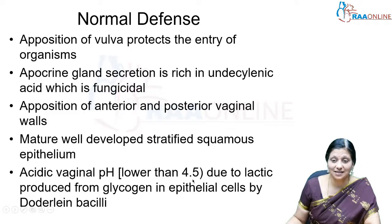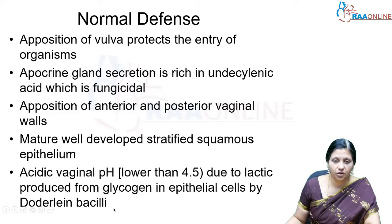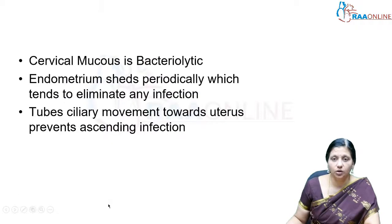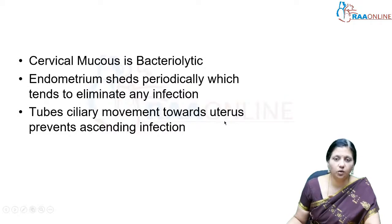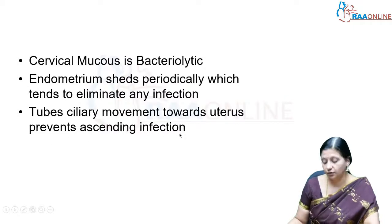The vaginal pH is very acidic at 4.5, because of the lactic acid produced from glycogen in epithelial cells by Doderlein's bacilli. There is also cervical mucus which is bacteriolytic. The endometrium sheds periodically, which tends to eliminate any infection, and the tubal ciliary movement towards the uterus also prevents ascending infection in the fallopian tubes.